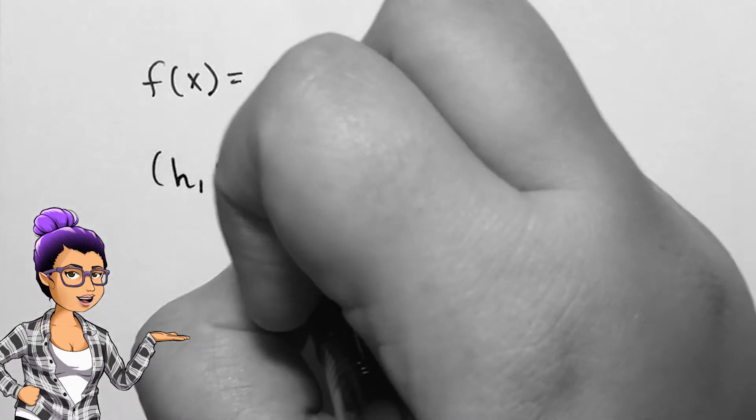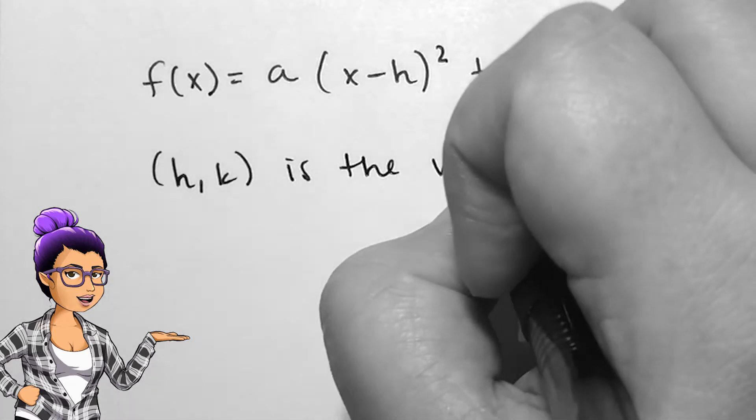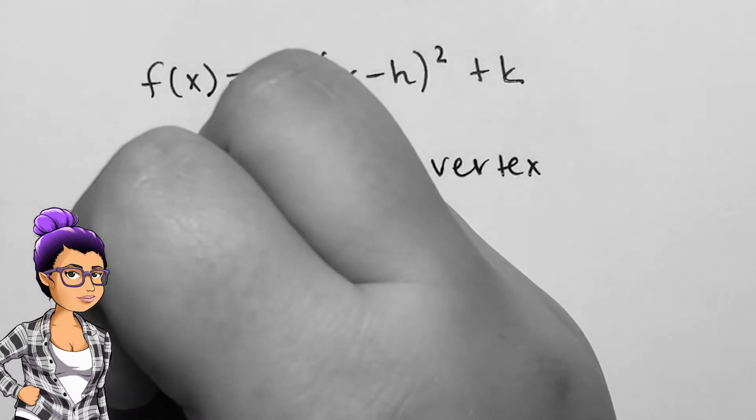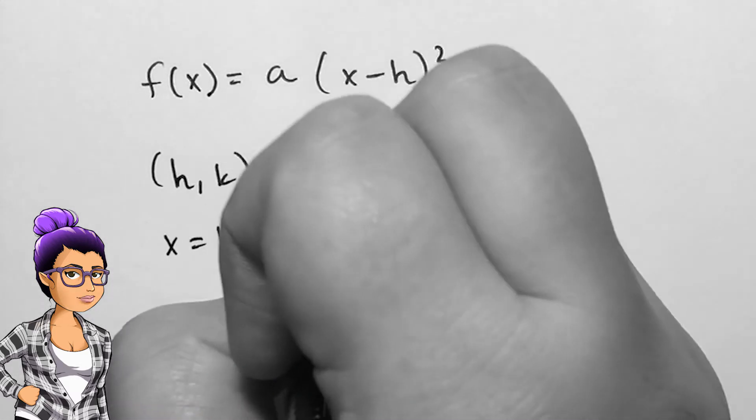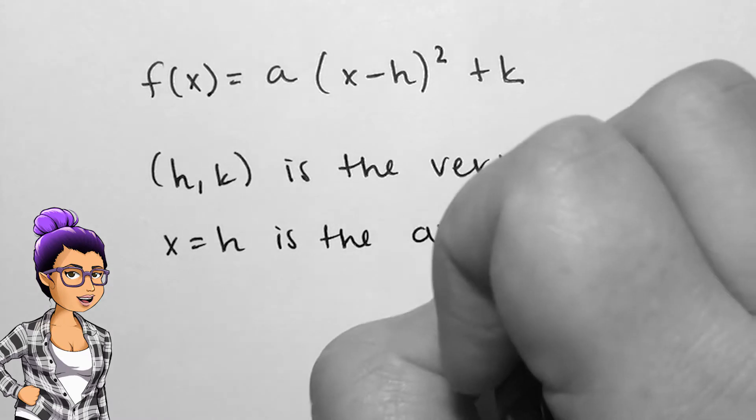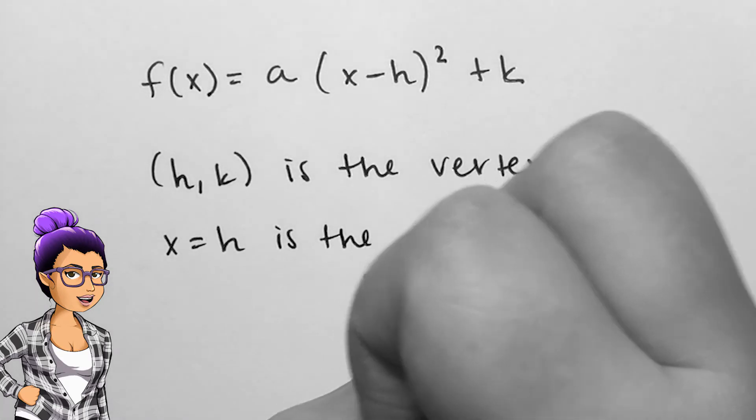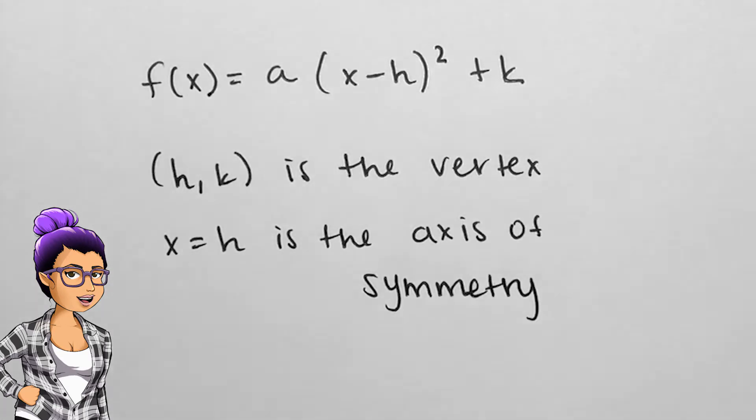Vertex form looks like f(x) = a(x - h)² + k, where (h, k) is the vertex, rather the extreme value of the parabola, a is the vertical stretch and reflection, and x = h is the axis of symmetry.